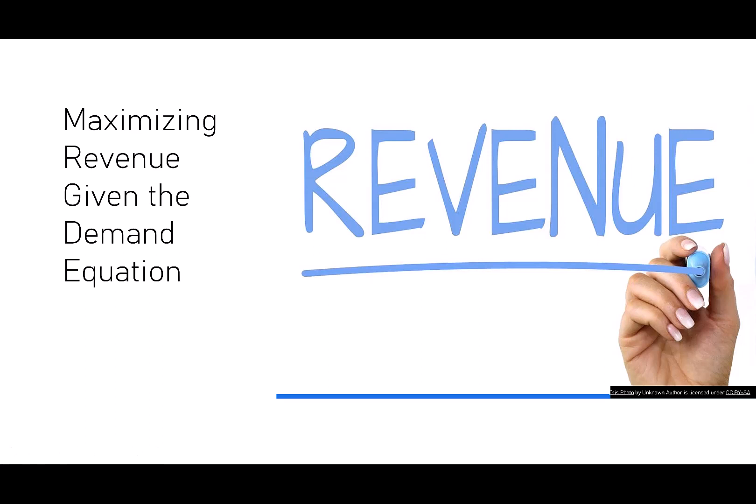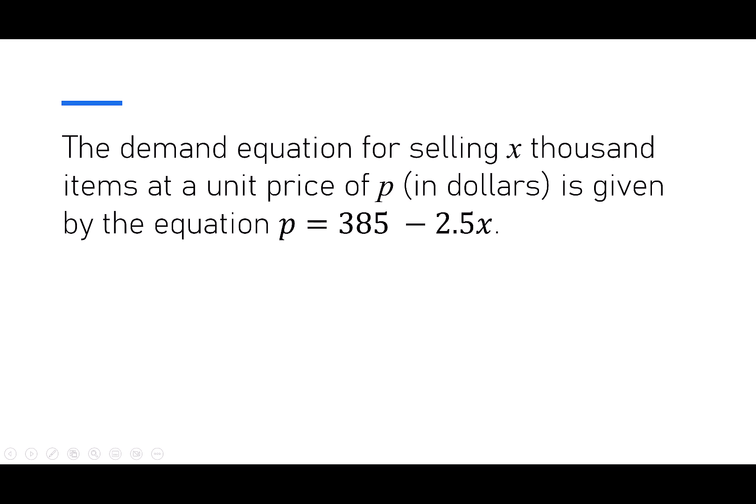Today we're going to look at maximizing revenue when we're given the demand equation. We're given that the demand equation for selling x thousand items at a unit price p in dollars is given by the equation p equals 385 minus 2.5x. So this tells me at a price p, we'll be able to sell x thousand of this particular item.